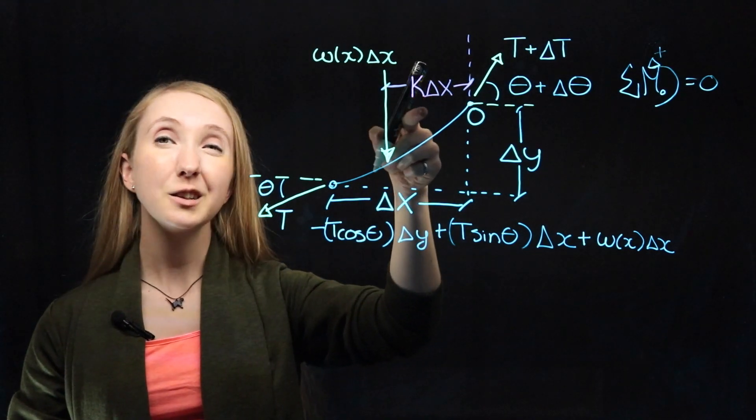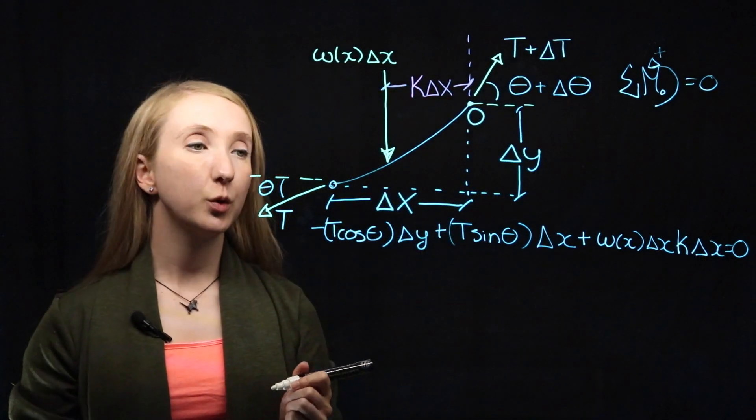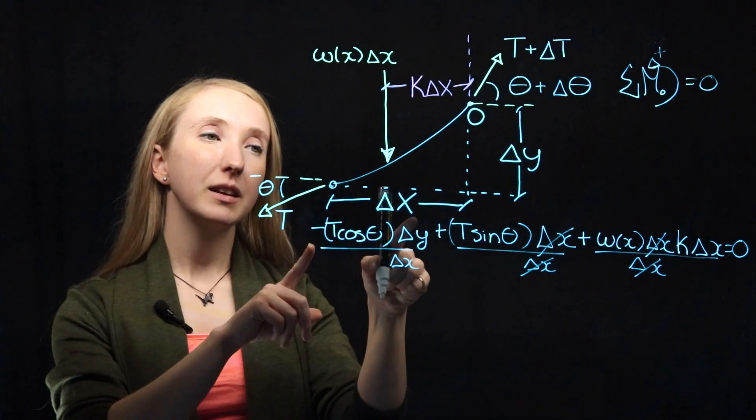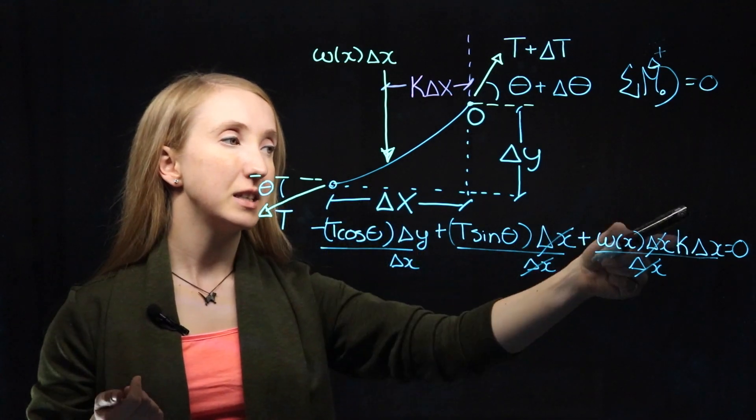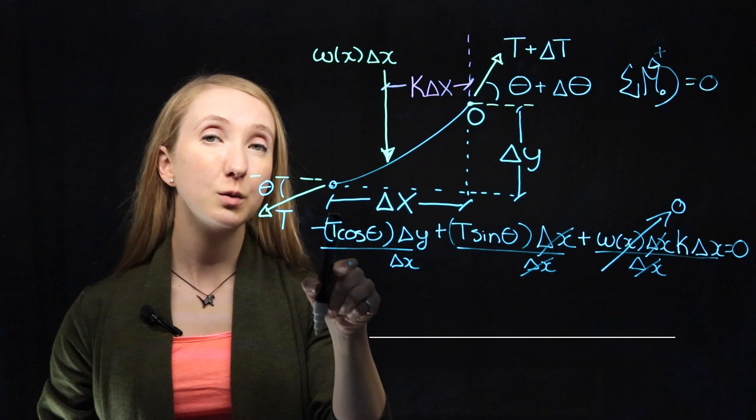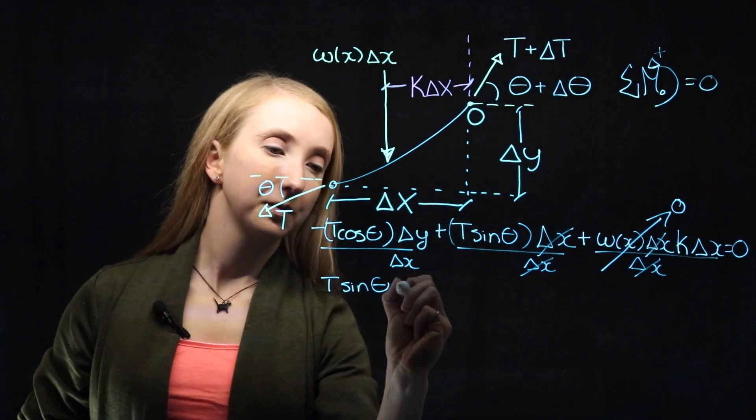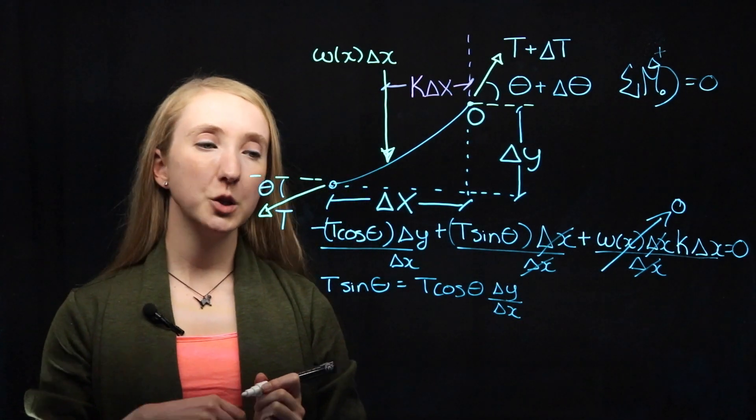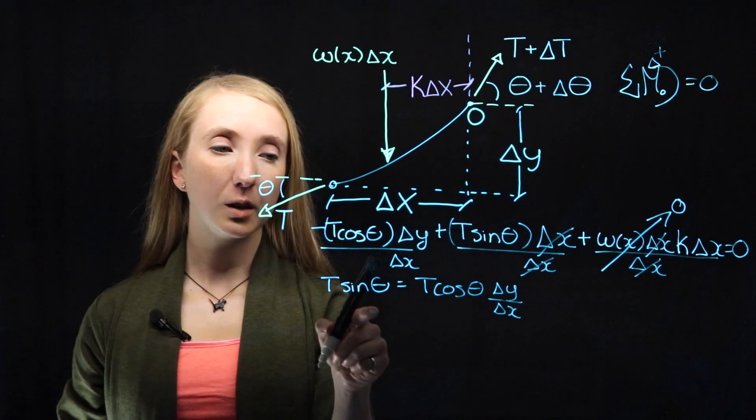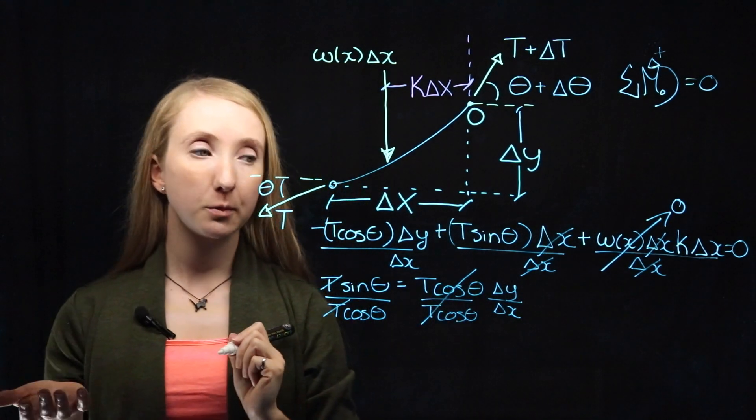That leaves us with our applied force. And remember, it's acting at a perpendicular distance of K times delta X. And just like last time, we're going to divide everything by delta X. And look at our segment as delta X approaches zero. So since we still have a delta X term here, this whole term is going to go to zero. Then we're going to add T cos theta delta X over delta X times Y to both sides of our equation so that we get... Then I want you to remember that sine over cos is equal to tan. So we can simplify this statement by dividing both sides of our expression by T cos theta. And these T's will cancel, which means that we get...